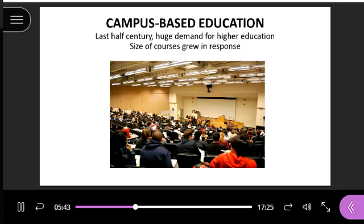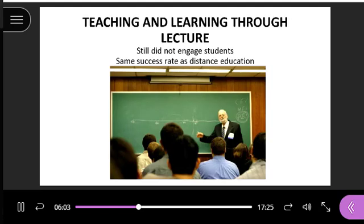Campus education has always been around, but the last half century it's really grown because of the demand for higher education. In response to that, the size of courses at a lot of colleges kept getting bigger and bigger. But this type of teaching didn't engage students because they were just big massive classes, and they found out this had basically the same success rate as the distance education where we were just mailing information to students.